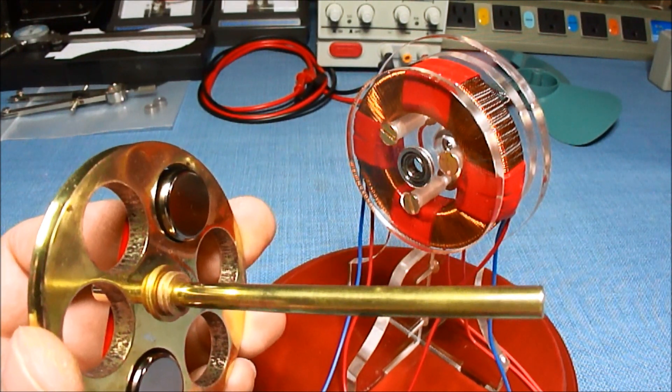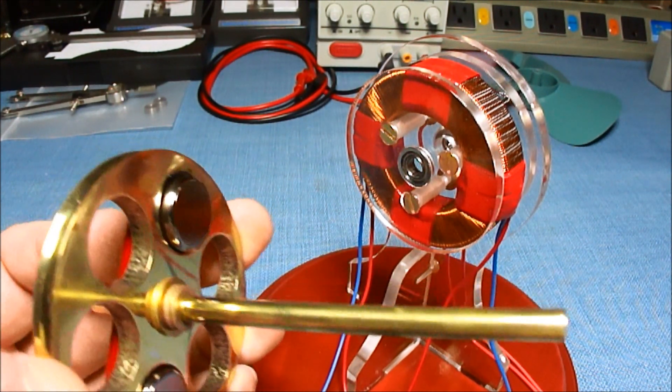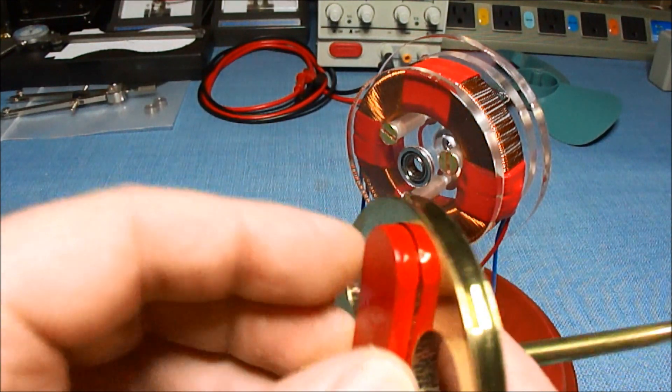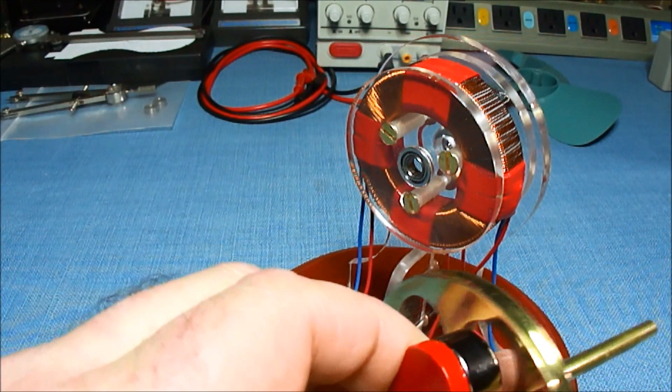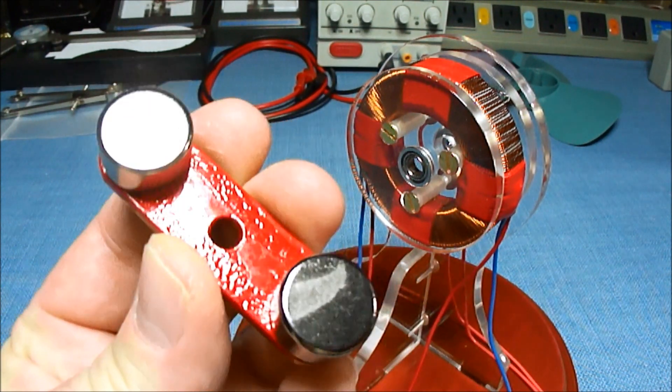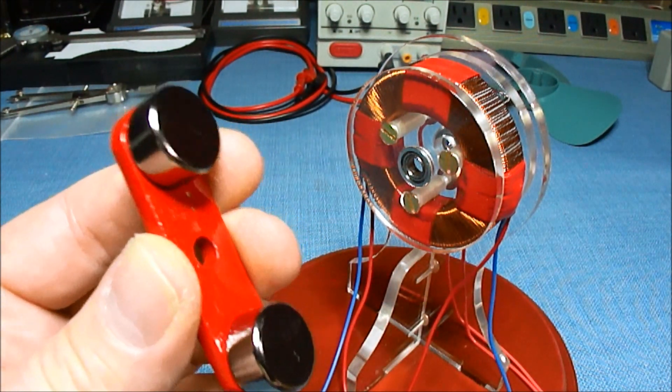This is a brass shaft and flywheel, and then there's the two three-quarter inch neodymium magnets on the steel keeper, and they're north-south facing the core.